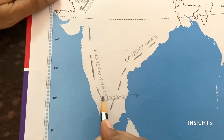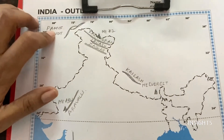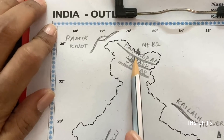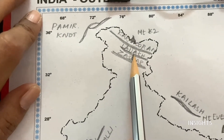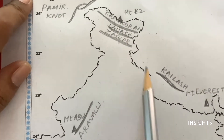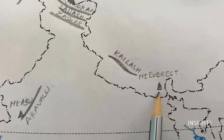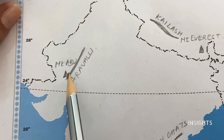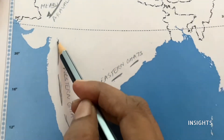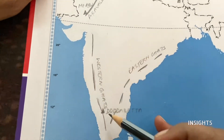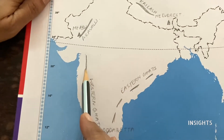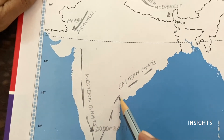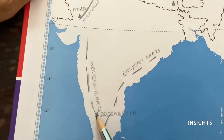Whether they ask a hill or a peak, you have to give a triangle and shade it fully. So let's recap from the top: Pamir Knot, then Karakoram and Mount K2, then Ladakh, then Zaskar, then Kailash Range, then Mount Everest — the highest peak in the world. Then Aravali Range and Mount Abu. Then Western Ghats in the Peninsular region — remember not to put it on the coast but slightly away. Eastern Ghats have lots of gaps. And another peak is Dodda Betta.